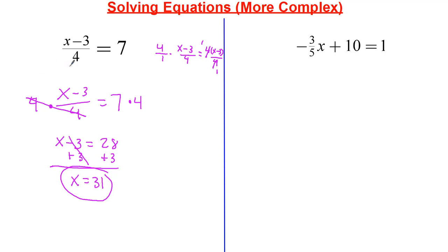Now what you should always do with these problems is, of course, just try to go back and plug in and see if it makes sense. So x is 31. So 31 minus 3 divided by 4 is going to be equal to 7. 31 minus 3 is 28, so 28 divided by 4 is equal to 7. And yes, that's true. 7 is equal to 7. So we know that we did that correct because we were able to check.